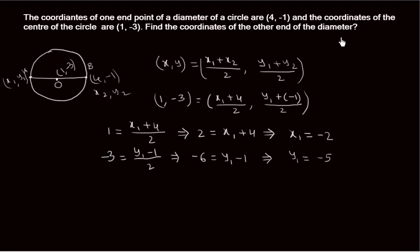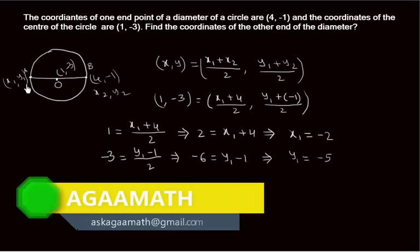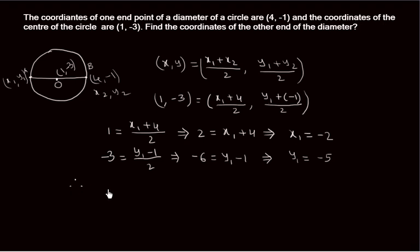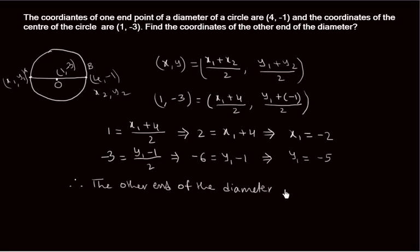We had taken the other end of the diameter as (x1, y1). So x1 = -2 and y1 = -5. Therefore, the coordinates of the other end of the diameter are (-2, -5). This is today's class — thank you.